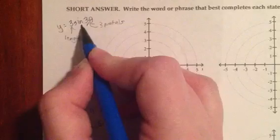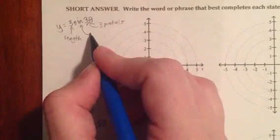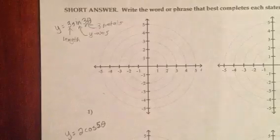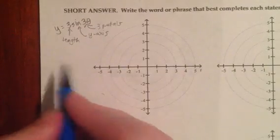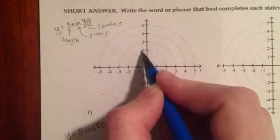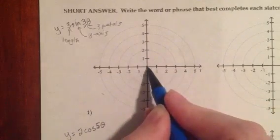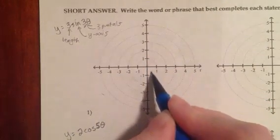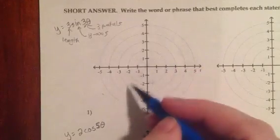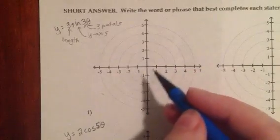It also tells us, because it's sine and there's an odd number of petals, that we have symmetry across the y-axis. So there's two different ways that this could end up being. Either I have a petal up here on the y-axis, or I have a petal that's down here on the y-axis. And depending on which of those situations I have, then the other two petals will fall into place.